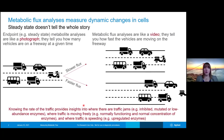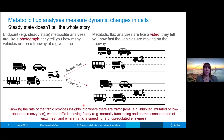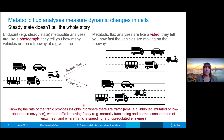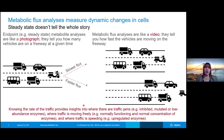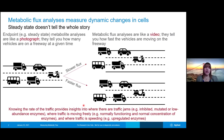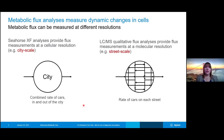This can provide insights into where there are traffic jams in cells — regions where enzymes are inhibited, mutated, or in low abundance. We can also get an idea of where traffic is moving freely at normal speed, which gives an indication of where enzymes are functioning normally. On the other hand, we might find regions where the rate is really fast, indicating areas where we have upregulated enzymes or gain-of-function enzymes. The seahorse and LC-MS qualitative flux analyses allow us to get these rate measurements and better understand how fast metabolic interconversions are happening within cells.